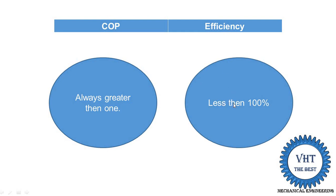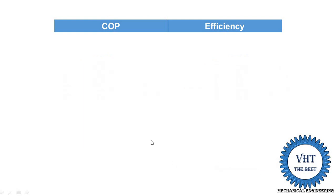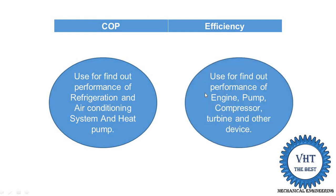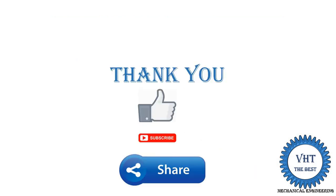The final point is that COP is used to find out the performance of refrigeration and air conditioning systems and heat pumps, while efficiency is found out for the majority of components such as engines, pumps, compressors, turbines, and any other devices.